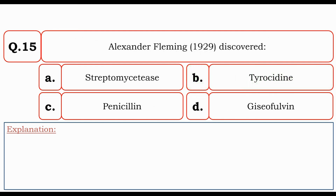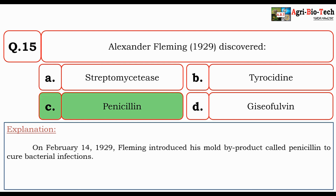The last question: Alexander Fleming in 1929 discovered — streptomycin, tyrocidine, penicillin, or griseofulvin? The correct option is penicillin. On February 14, 1929, Fleming introduced his mold byproduct called penicillin to cure bacterial infections.